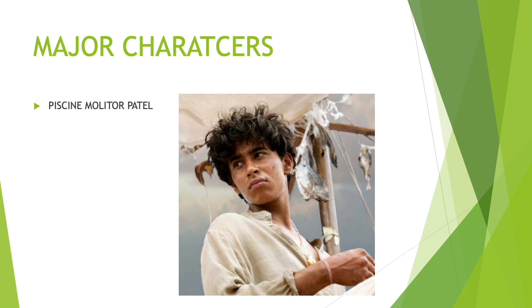Our first major character is Pisin Molitor Patel, also known as Pi. He is the main protagonist and the chief narrator. Pisin comes from the French word for swimming pool, and it also means fish-like in English. He is intelligent, full of courtesy, deeply religious, and searching for a connection to God or meaning in life by exploring and practicing Christianity, Islam, and Hinduism. From childhood, Pi gathers knowledge about the habits and characteristics of animals and people, which turns out to be crucial to his survival. Pi's character develops in the course of the novel, particularly in part two.